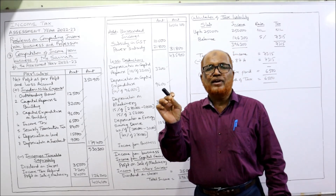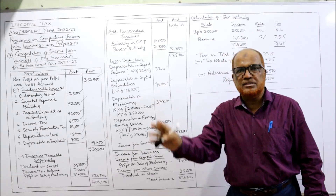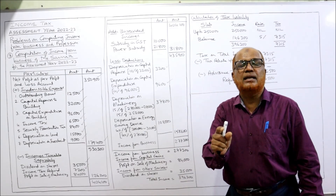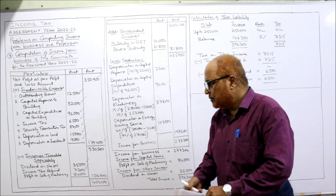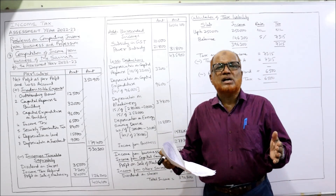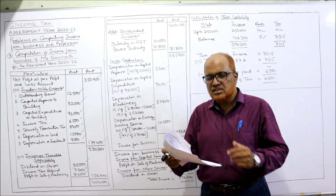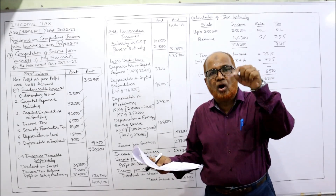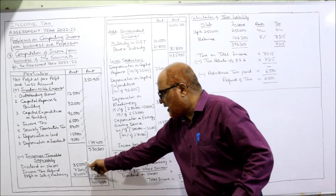Profit on sale of machinery: any profit on sale of a depreciable asset will always be a short-term capital gain — it is not a business income. It is taxable under the head income from capital gains as a short-term capital gain, which is taxed on a slab system along with other incomes. So we deduct profit on sale of machinery ₹84,000. Hire of machinery: some machinery was idle, so the assessee let out that machinery on rent and received hire charges — it's a business income, nothing to be done.